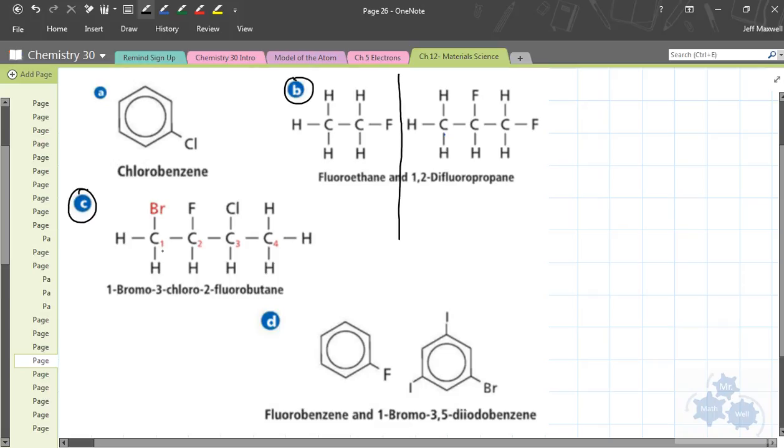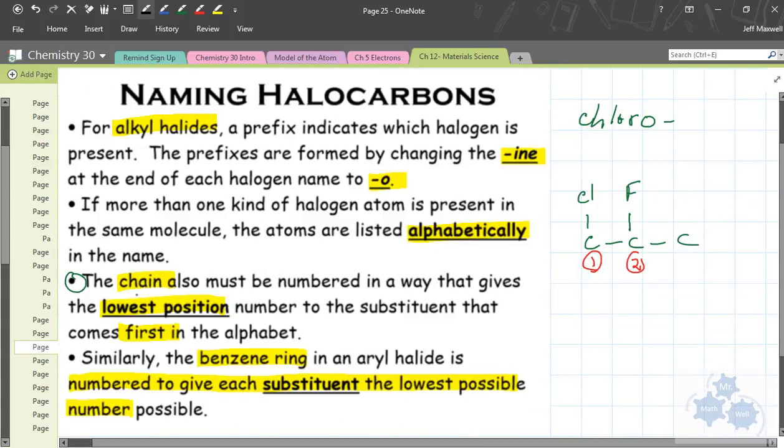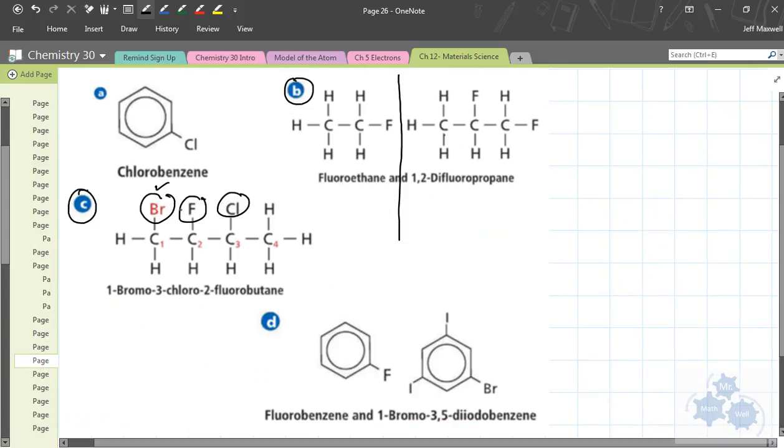In example C here, you see we have a bromine, we have a fluorine, we have a chlorine. And so you have to name them in alphabetical order. So which one comes first? The bromine has to come first. So in the notes, this one right here, the chain must be numbered so that the lowest position number is given to the first one that comes alphabetically. So that's what they mean here. This has to be carbon one, because the bromine is on it. So it's one bromo. Remember it's the O there, so you attach the O there, one bromo.